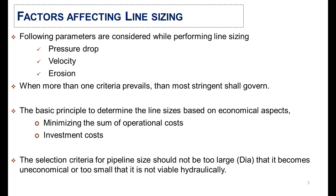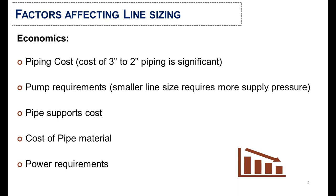That is minimizing the sum of operational cost and investment cost. The selection criteria for pipeline size should not be too large that it becomes uneconomical, or too small that it is not viable hydraulically. In economics, the piping cost is a main cost.